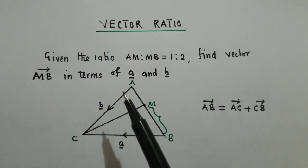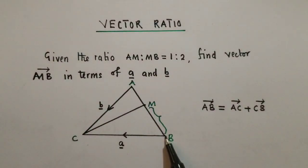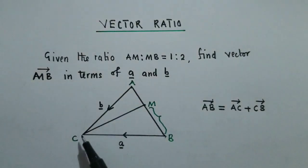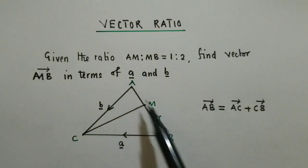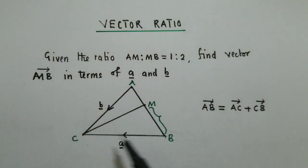In other words, if you're standing at A and want to go to B, which other way can you move? You can move from A to C, then C to B. And this is what I've done. Vector AB equals vector AC plus CB.